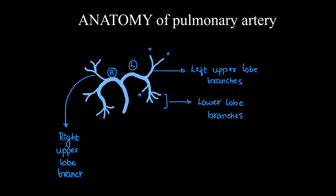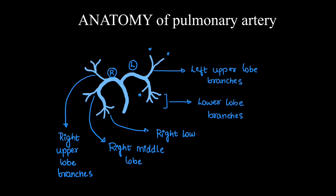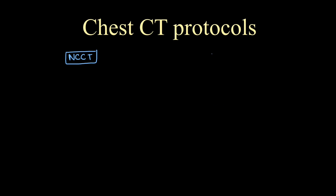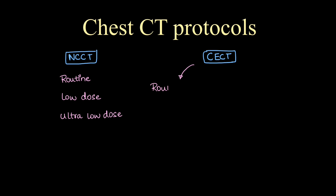The right main pulmonary artery also supplies the middle lobe — medial and lateral segments — and the lower lobe basal segments. Generally, when acquiring chest CT we have protocols: non-contrast and contrast-enhanced, with non-contrast as routine low dose and ultra-low dose.